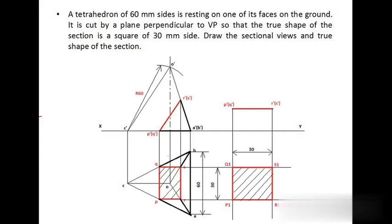Once you get O dash, connect O dash to C dash, A dash, and B dash to complete the front view of the tetrahedron. This is an indirect question — you are not given the position of the section plane; instead, you are given that the true shape is a square of 30 mm side. For a square there are four corners, so the section plane must cut exactly four edges of the tetrahedron. Locate P and Q such that PQ equals 30 mm — 15 mm on each side of the central line OC.